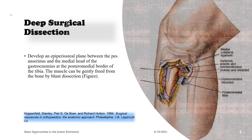Deep Surgical Dissection: Develop an epiperiosteal plane between the pes anserinus and the medial head of the gastrocnemius at the postero-medial border of the tibia. The muscle can be gently freed from the bone by blunt dissection.